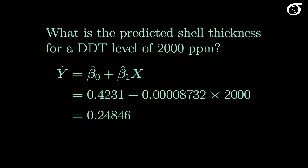What is the predicted shell thickness for a DDT concentration of 2,000 parts per million? Well, 2,000 is our x, and we simply substitute that into the regression line. And if we were to carry out those calculations, we'd see that our predicted y value is 0.24846 millimeters. And so our predicted shell thickness for a DDT level of 2,000 parts per million is about a quarter millimeter.